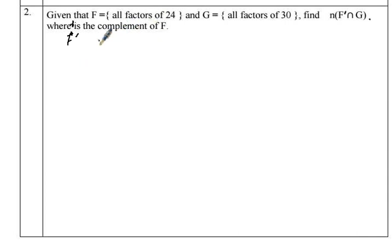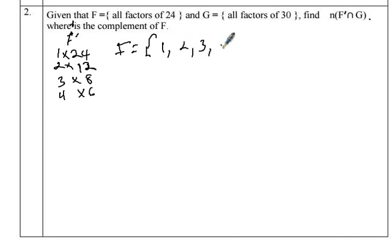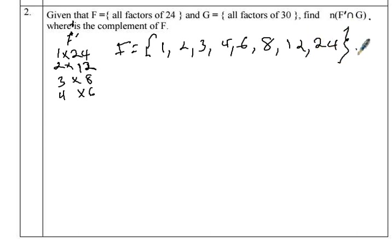The easiest way to get all factors is to use the times table. For example: 1 times 24, 2 times 12, 3 times 8, 4 times 6. So the factors of 24 are: 1, 2, 3, 4, 6, 8, 12, and 24.